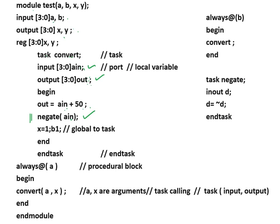The task 'negative' has one argument and performs d = negation of d. We call this task from within 'convert'. Then, x = 1'b1 is a global variable assignment because x belongs to the module, not to the task. After begin-end, the task ends with the 'endtask' keyword.